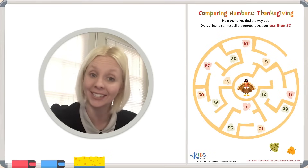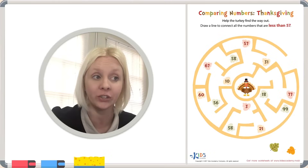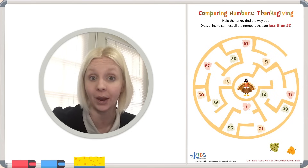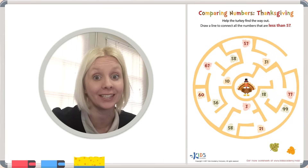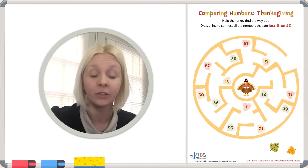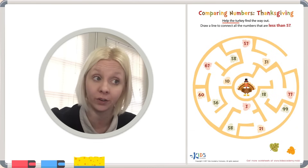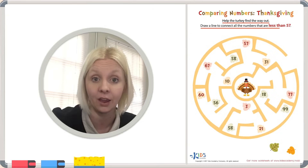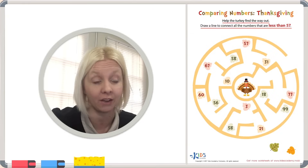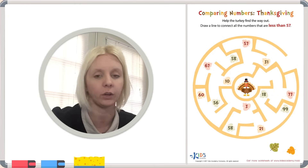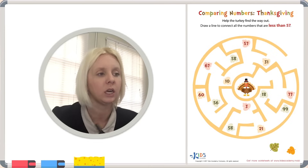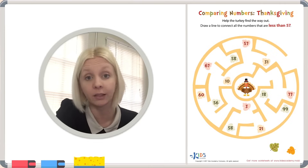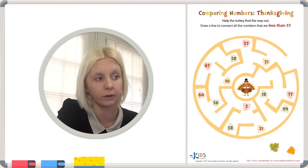Welcome back. It's nice to see you again. What we're going to do today is compare numbers, and we've got a Thanksgiving-themed worksheet — this is going to be lots of fun. The directions say: help the turkey find the way out. Draw a line to connect all the numbers that are less than 57. So let's come over here to the side and draw out a number line, putting 57 in the middle.